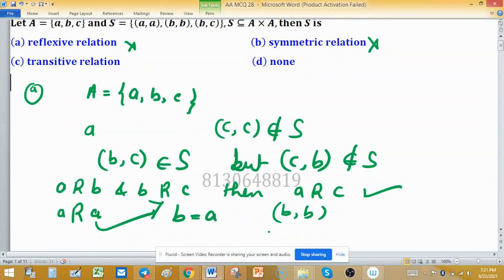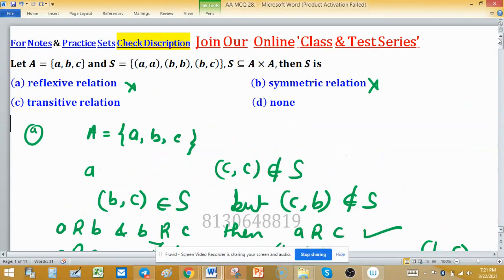But if I choose (b,b) and (b,c), these two elements, then (b,c) is again in the relation, so the relation is transitive because of the bounding condition.